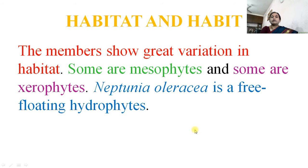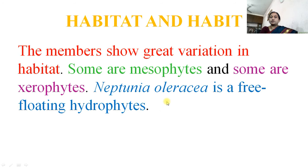Habitat and habit: the members show great variation in habitat. Some are mesophytes and some are xerophytes. Neptunia oleracea is a free-floating hydrophyte. So all types of habitat are found here — mesophytes, xerophytes, and floating hydrophytes.